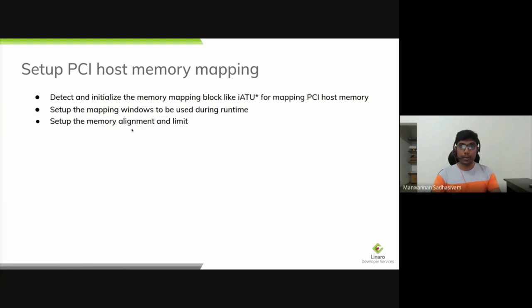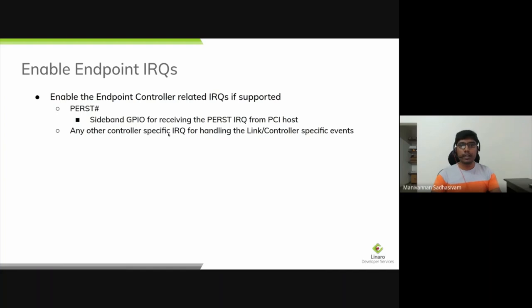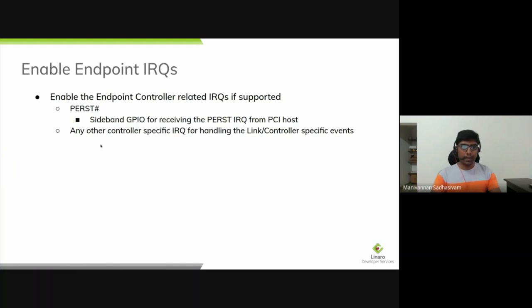The next step is to enable endpoint IRQs. The PCI endpoint device can use the PCI PERST event defined in the PCI spec, which signals clock and power ready events from the PCI host to the endpoint. The endpoint driver assigns an interrupt to the PERST IRQ to catch it and prepare the endpoint framework. Usually the PERST IRQ is served using a sideband GPIO — a special purpose GPIO defined by the PCI spec. Any other controller-specific IRQ events, such as link or controller-specific events, also need to be allocated and assigned in the driver.